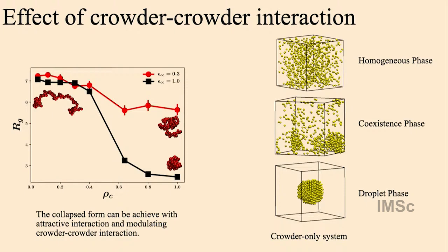What was very interesting was that as I tuned epsilon_cc from 0.3 to 1, the collapse became more prominent. This suggests that crowder-crowder interactions contribute to collapse independently. We are now trying to implement this by studying a crowder-only system — a box containing only crowder particles. As we increase epsilon_cc and density, you can get three phases: a homogeneous phase, a coexistence phase where two phases exist together, and a droplet phase where all particles form a single droplet.